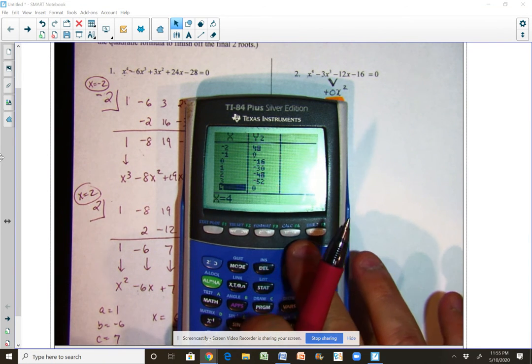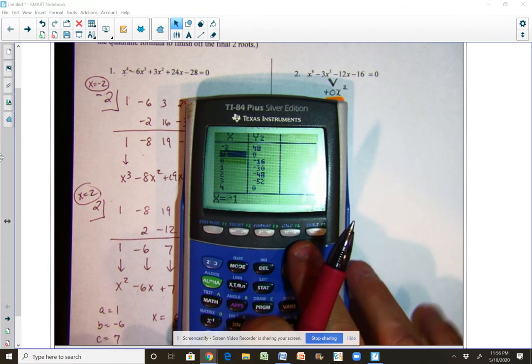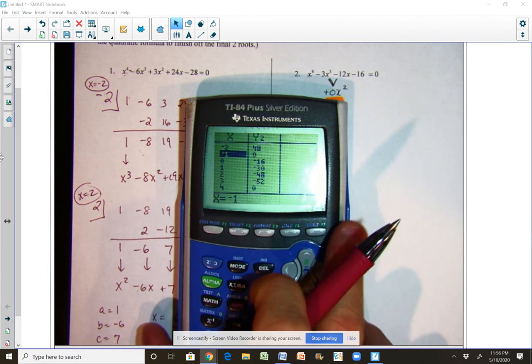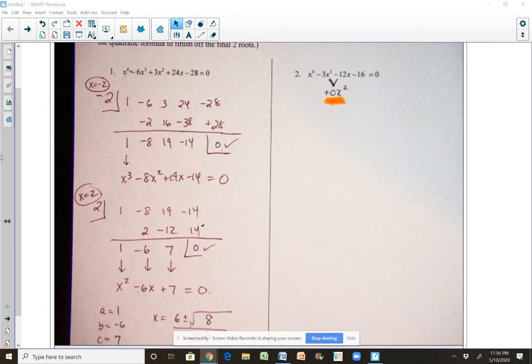So those are our two rational roots that we're going to be able to then synthetically divide out, negative 1 and positive 4, similar to the first example.